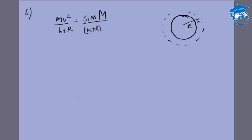The normal equation except R would be replaced by R plus h, which gives me v is equal to root of GM by (h plus R).